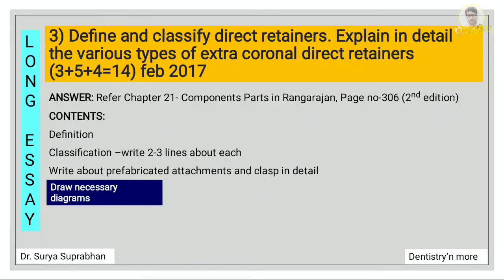What are the components of removable partial denture? Describe in detail about maxillary major connector. Define and classify direct retainers — that has already been discussed. The second question is: explain in detail the various types of extracoronal direct retainer. For this you have to write in detail about the prefabricated attachments and clasp in detail, and also draw the necessary diagrams.